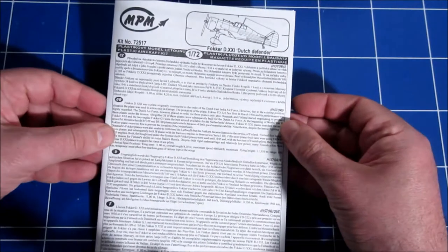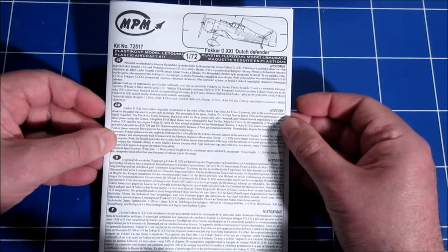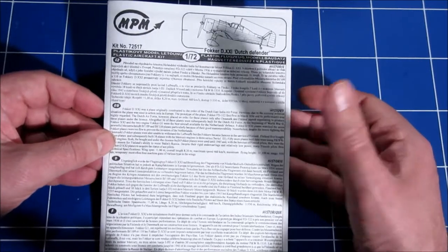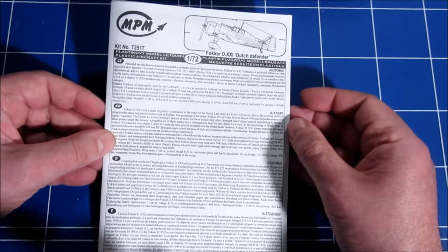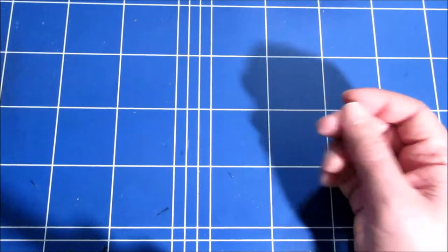So there you have it, the 1:72 scale Fokker D.XXI by MPM. Thank you for watching and until the next video.